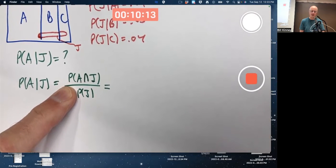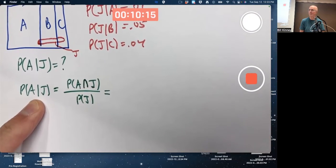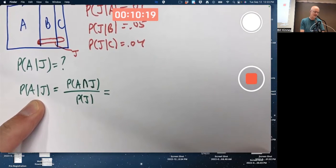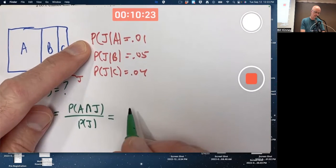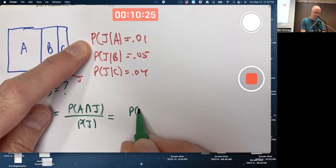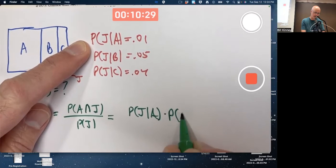So that's the definition of conditional probability, but to find the top and the bottom, the numerator and denominator, I need to use the general multiplication rule. With the top, use it, but don't use it using that conditional probability because that's what we're trying to find. Instead, use that one. Conditional probability of J given A times the unconditional probability of A.